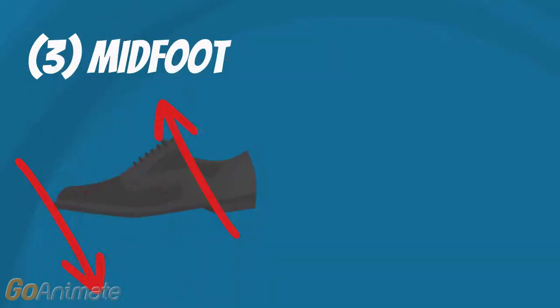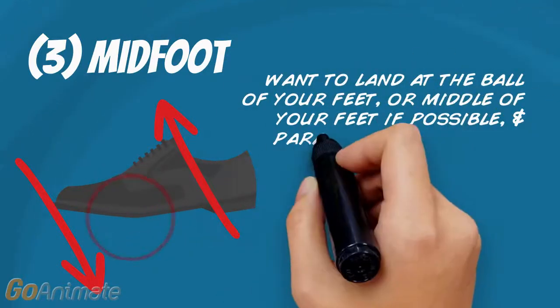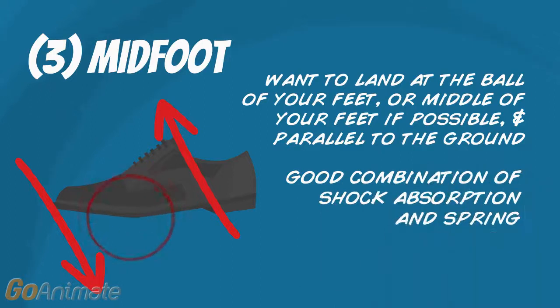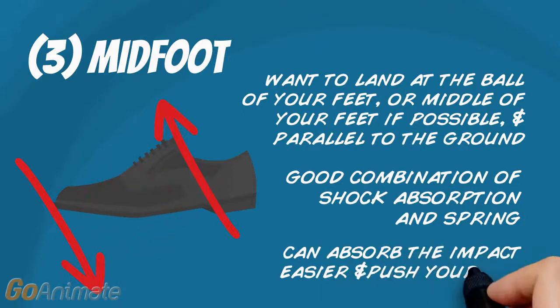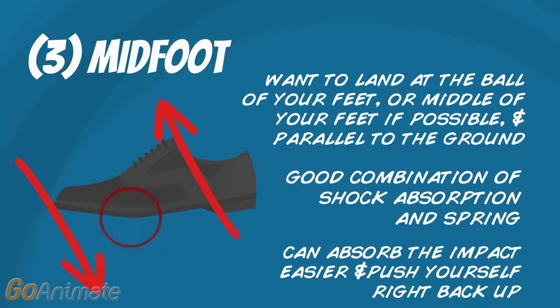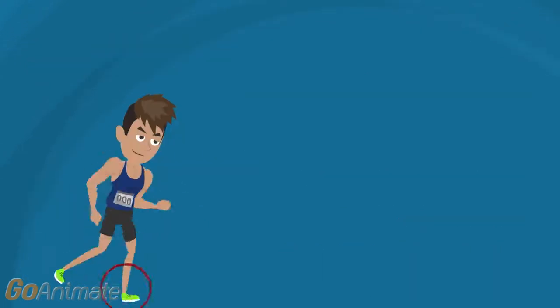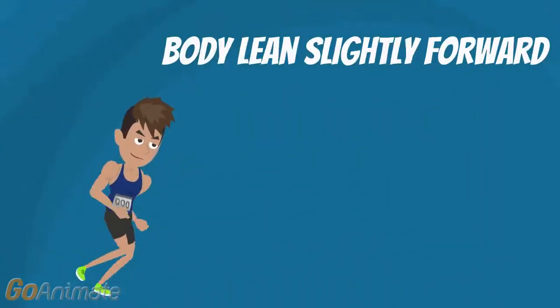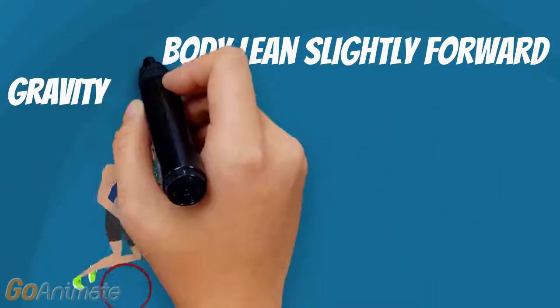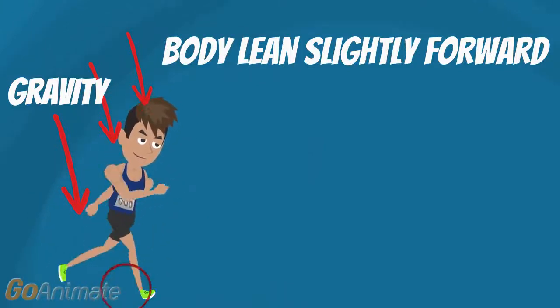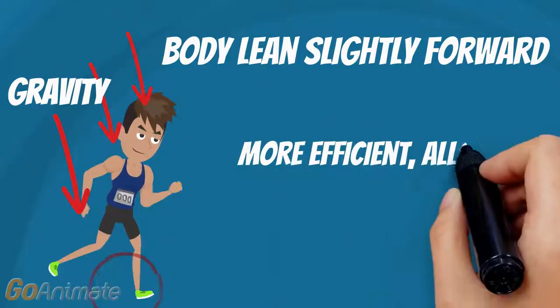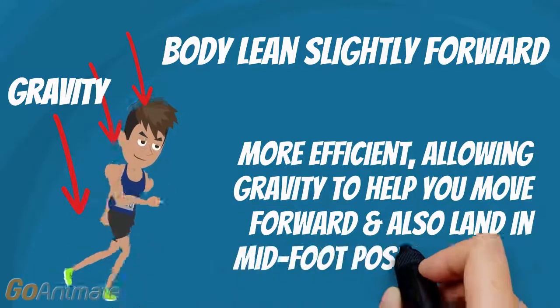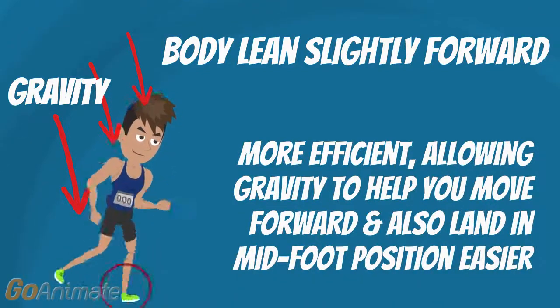Therefore, you want to land on the ball of your feet or middle of your feet if possible and parallel to the ground. When you do this, there is a good combination of shock absorption and spring because as you land, you can absorb the impact easier and put yourself right back up for your next step. Besides focusing on where you land, it is important to have your body lean slightly forward when you run. Gravity is going straight down, and when you have a slight lean forward in your body, you are more efficient when you are running because you are allowing gravity to help you move forward. And also, it's easier for you to land in a midfoot position.